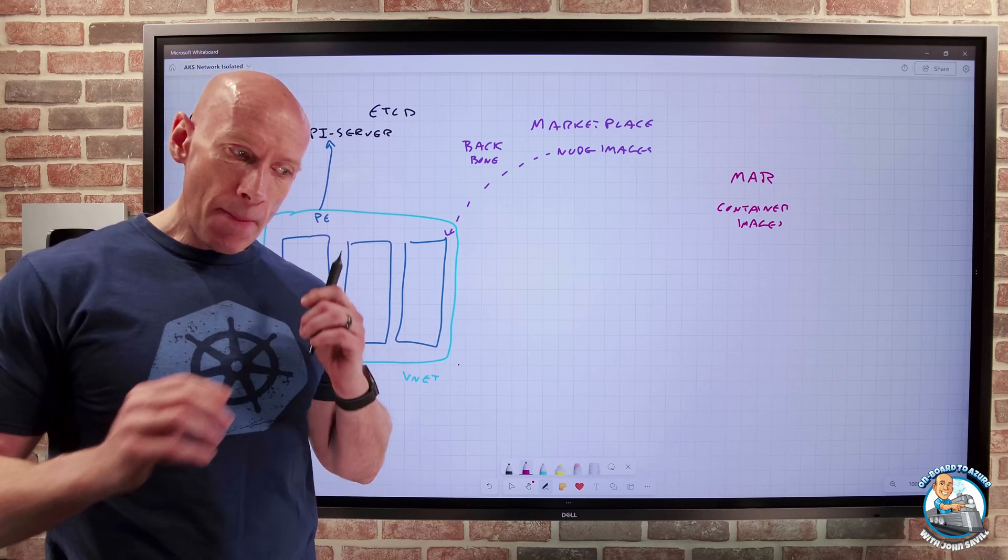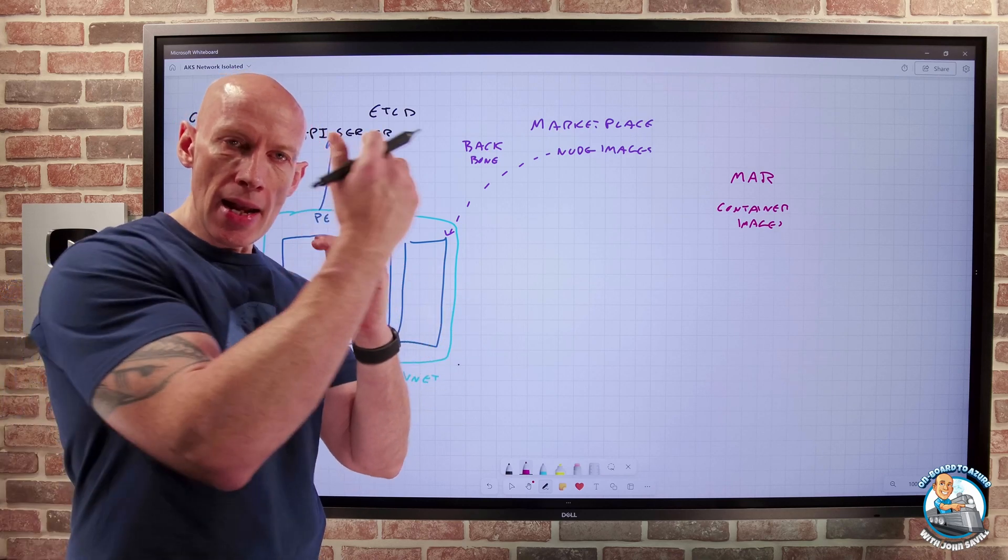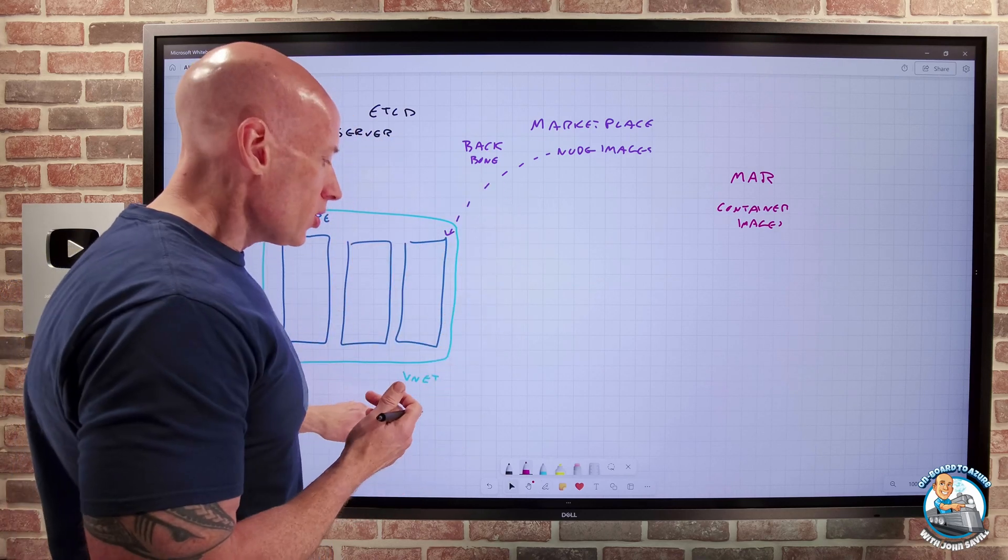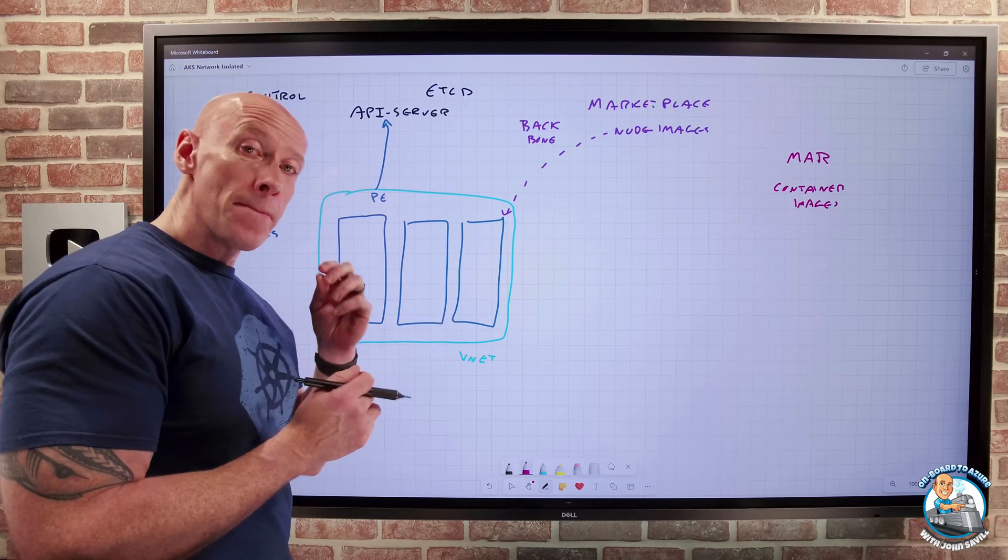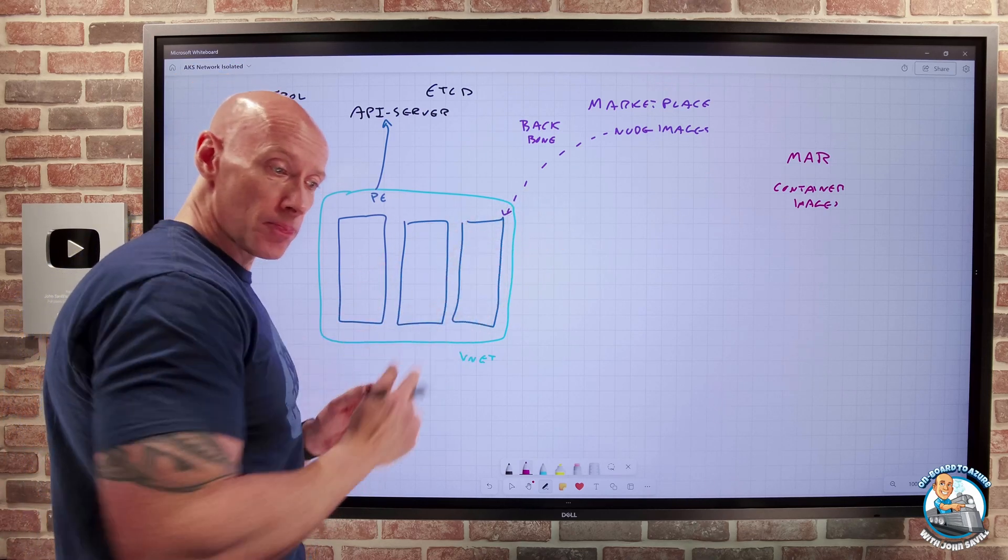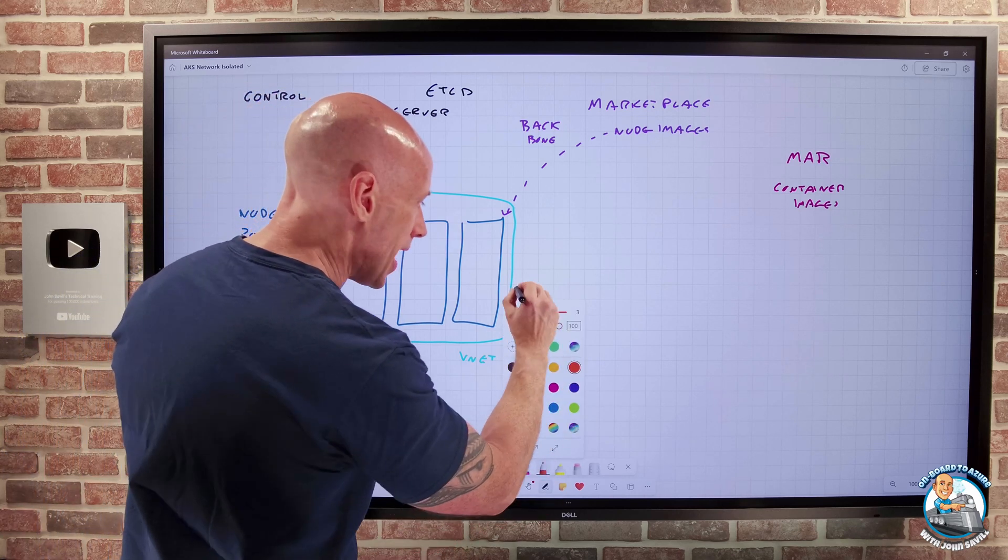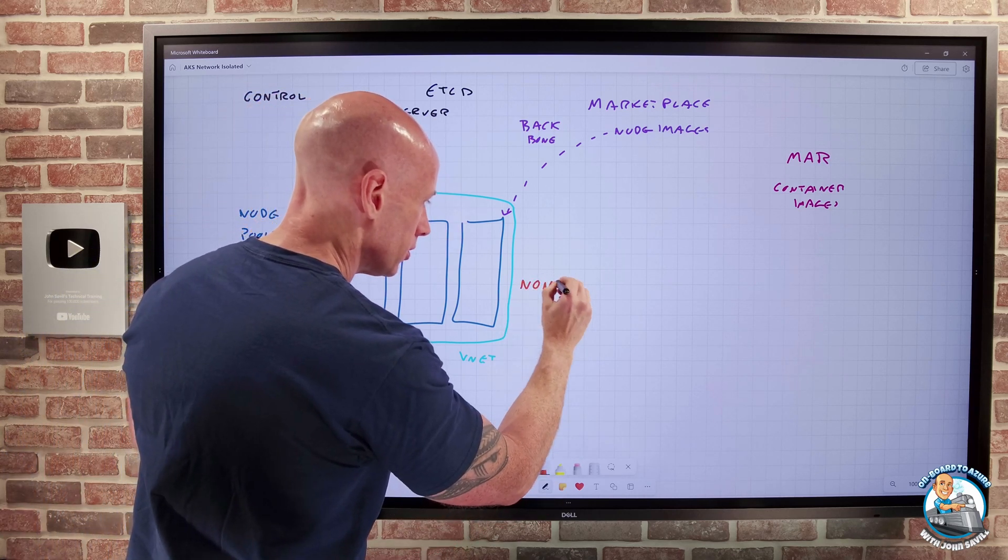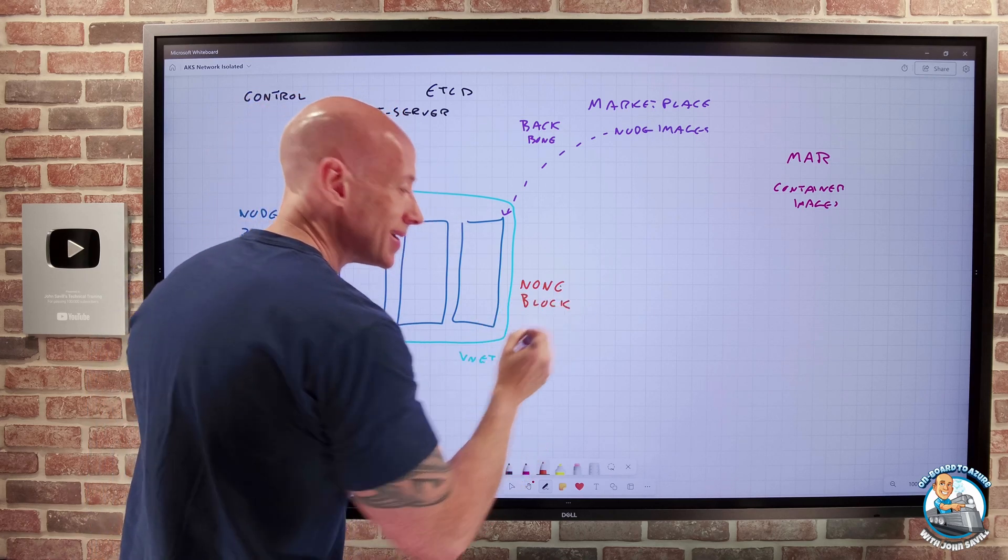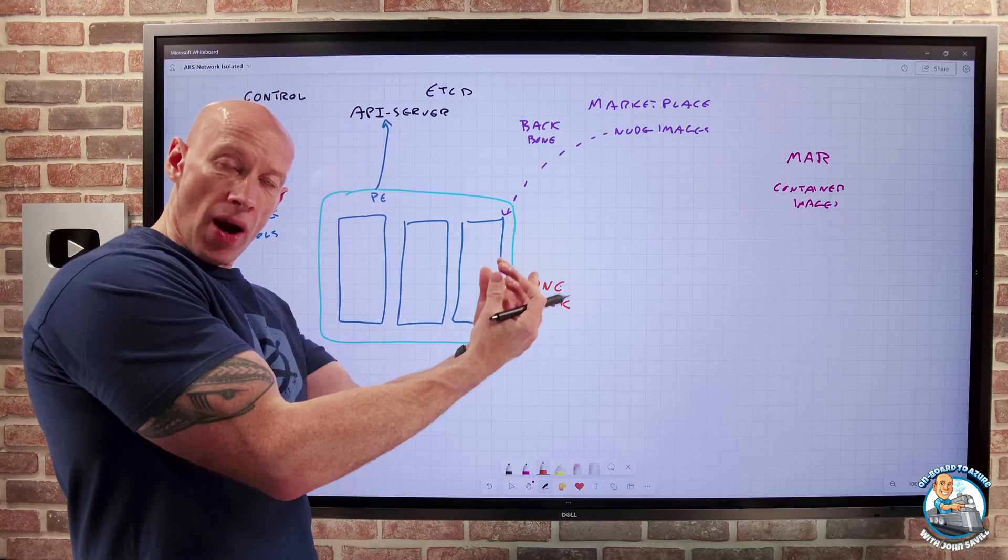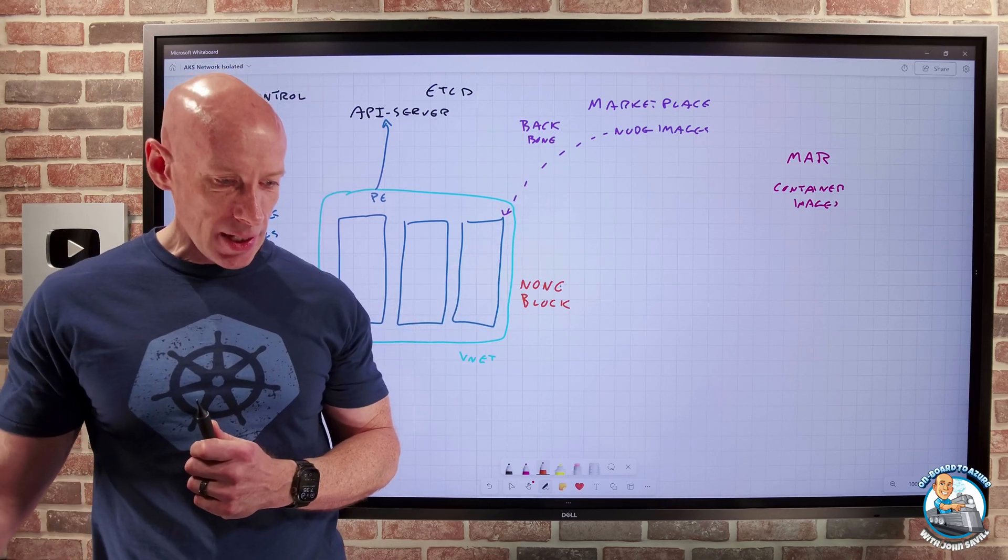So what we now have is the ability to have a network isolated cluster. And there's a number of aspects to that. The first is now when we actually create our AKS cluster, we can pick our outbound type. What we now have is the ability to have this set to none. Or we can actually set it to block as well. So none says, okay, this is a private subnet. There's no outbound access. Block will actually add an NSG to that as well.